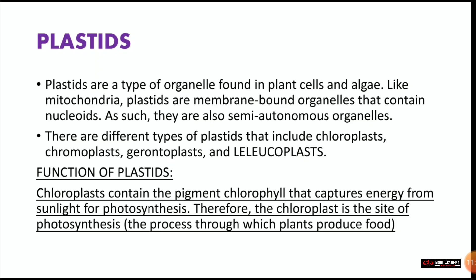The function of chloroplasts: chloroplasts contain the green pigment chlorophyll that captures energy from sunlight for photosynthesis. The green pigment is called chlorophyll — you have to remember this. It absorbs sunlight and helps in photosynthesis. Therefore, chloroplast is the site of photosynthesis — the process through which plants produce food.